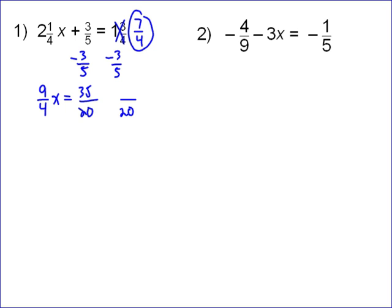And then it's minus because I subtracted 3 fifths, and I multiply 5 by 4, so it's going to be 12, a positive 12. So that means 9 fourths x equals 23 over 20, because 35 minus 12 is 23.